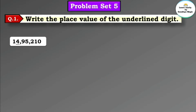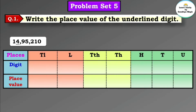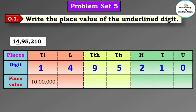Let's see the next number: 14,95,210 and the underlined digit is 4. Let's arrange this number according to their places. 1 is in the 10 lakhs place, 4 is in the lakhs place, 9 is in the 10 thousands place, 5 is in the thousands place, 2 is in the hundreds place, 1 is in the tens place, and 0 is in the units place. The place value of 1 is 10 lakh, and the place value of 4 is 4 lakh.